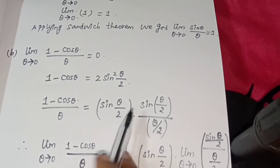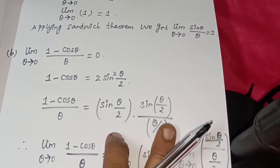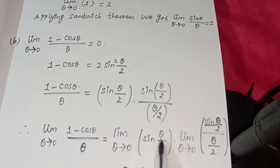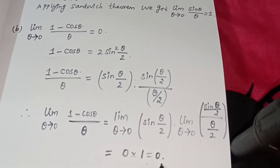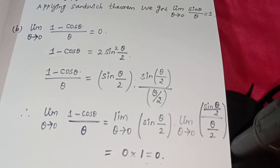Now substitute the limit. Limit of (1 − cos theta) over theta equals limit theta tends to 0 — splitting the limit and substituting, the sin(theta/2)/(theta/2) part goes to 1, and the remaining factor is 0 into 1, which equals 0. This is the final result. Thank you. Please subscribe to the Harimax channel.